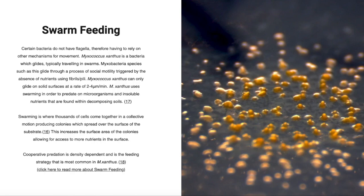This swarming is triggered by the absence of nutrients, as forming a multicellular structure benefits individual cells as the increased surface area allows more access to nutrients.